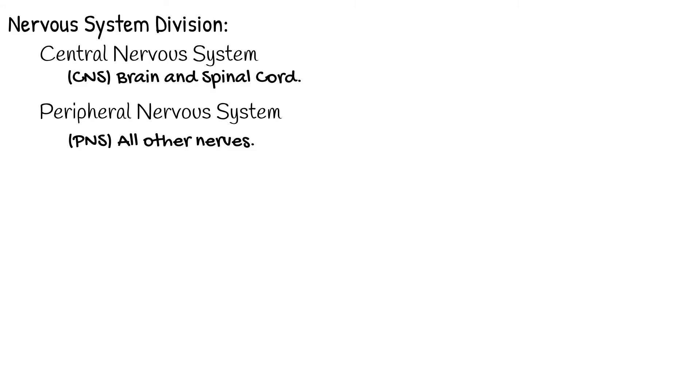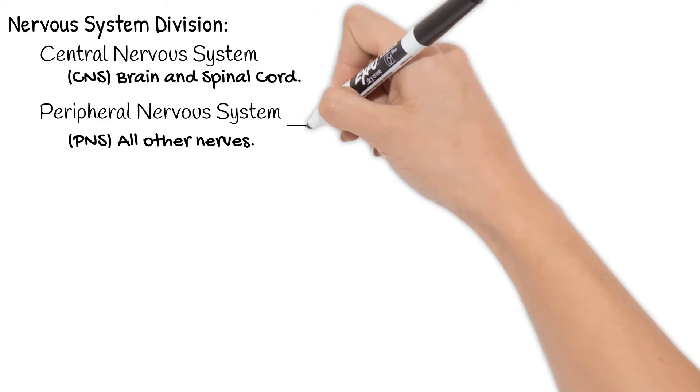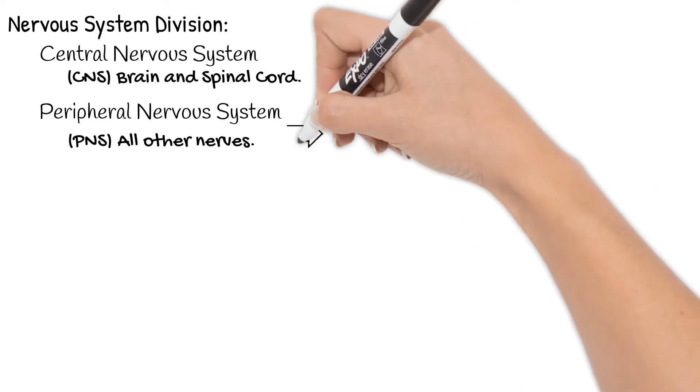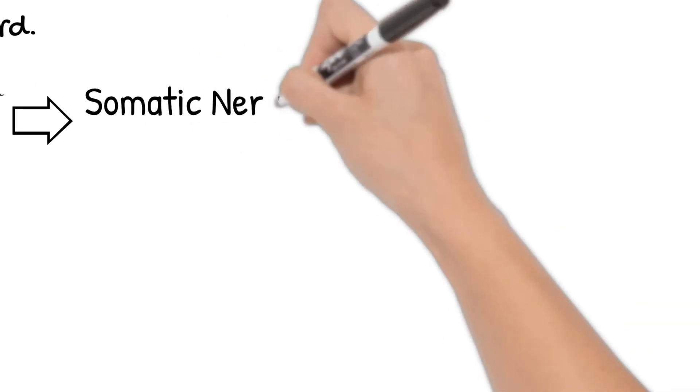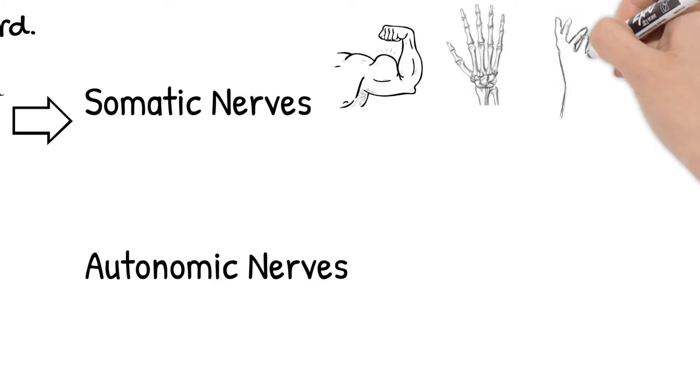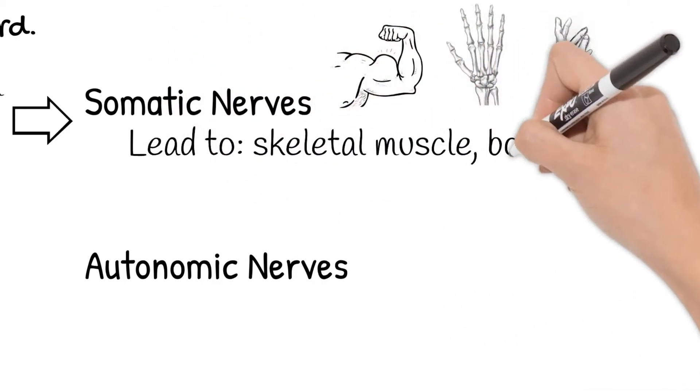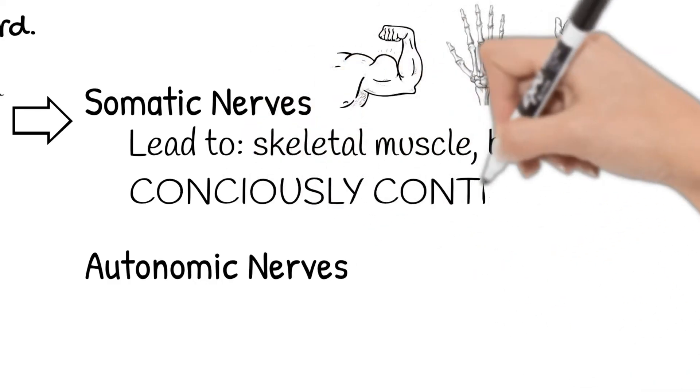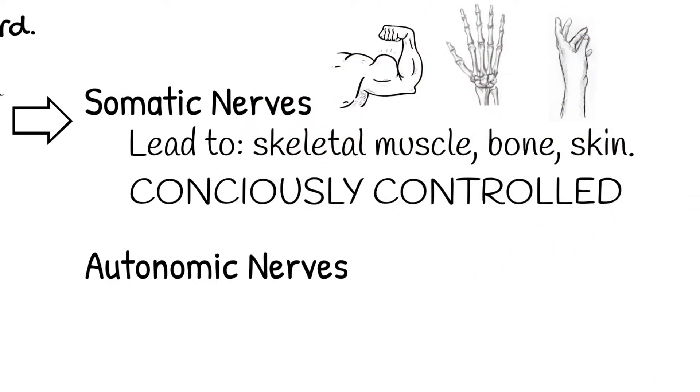Now if you're not too overwhelmed yet, there is an important breakdown of the peripheral nervous system. There are somatic nerves and autonomic nerves. Somatic nerves are mostly what's been discussed so far. These nerves lead to skeletal muscle, bone, and skin, and we consciously control them. So like you see a red light and you control your leg to press the brake.